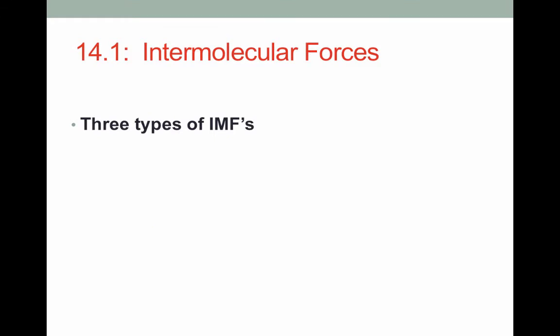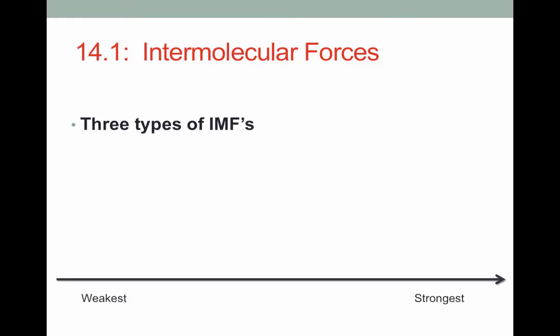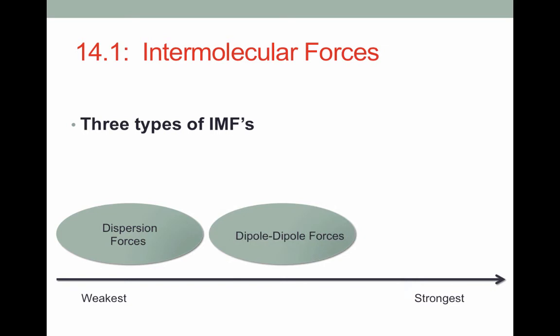Scientists classify intermolecular forces into three types. From weakest to strongest, these types are dispersion forces, the weakest; dipole-dipole forces, which are in the middle; and hydrogen bonds, which are the strongest. Notice that despite being called a hydrogen bond, these are different from bonds within a molecule — again, these are forces between molecules. All substances exhibit some form of intermolecular force, ranging from very weak dispersion forces to very strong hydrogen bonding. The key to determining what kind of forces are acting is to determine how polar the molecule is.